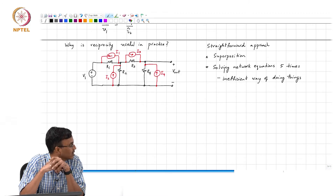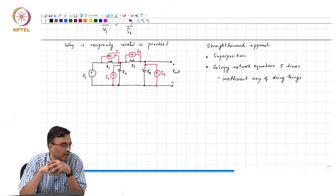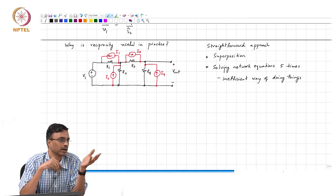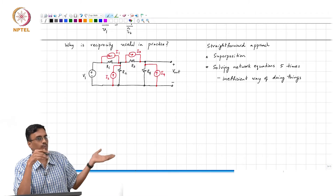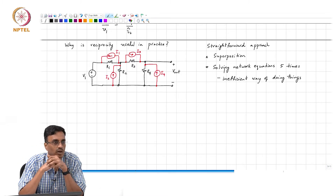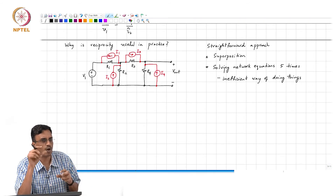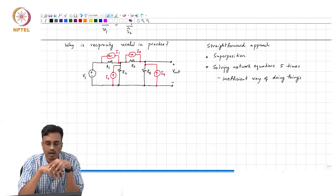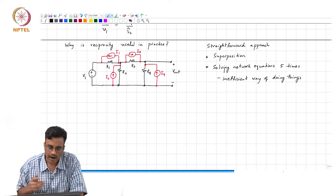And why is this an inefficient way of doing things? Because when you solve a network — you write KCL, KVL, or if you prefer mesh analysis, you do mesh analysis — you will end up doing the same thing over and over again 5 times with only a small change each time. The smart way of doing things is to use reciprocity, and the idea is the following.